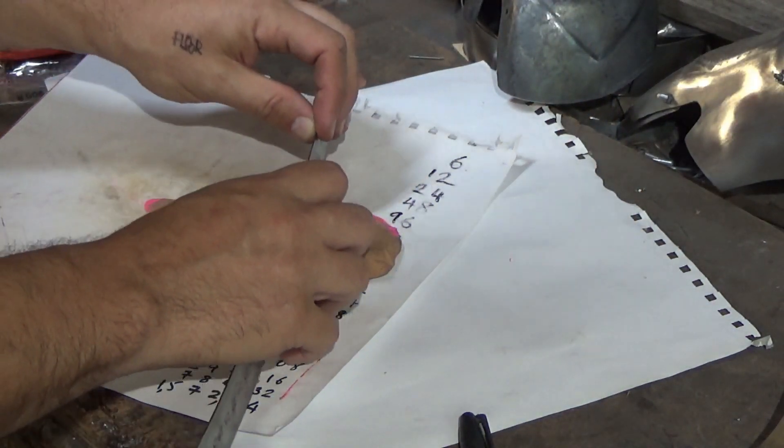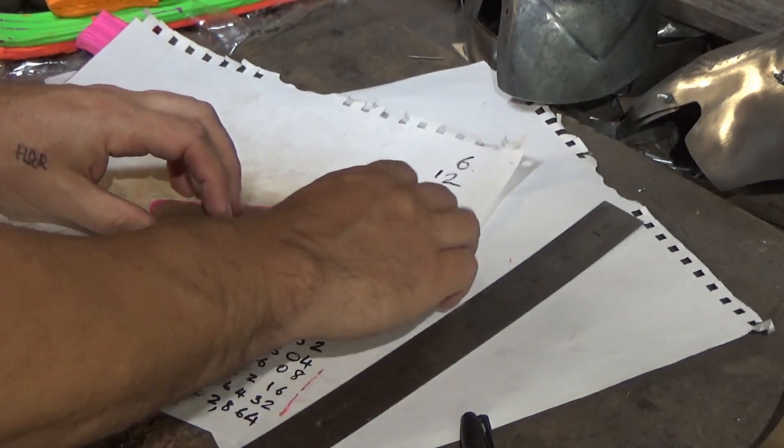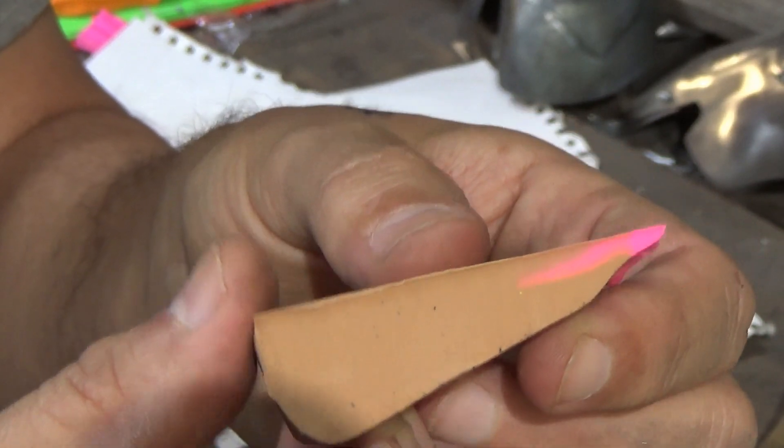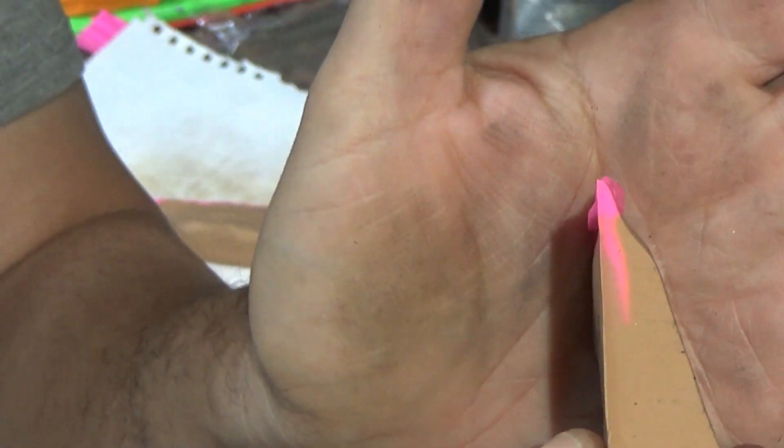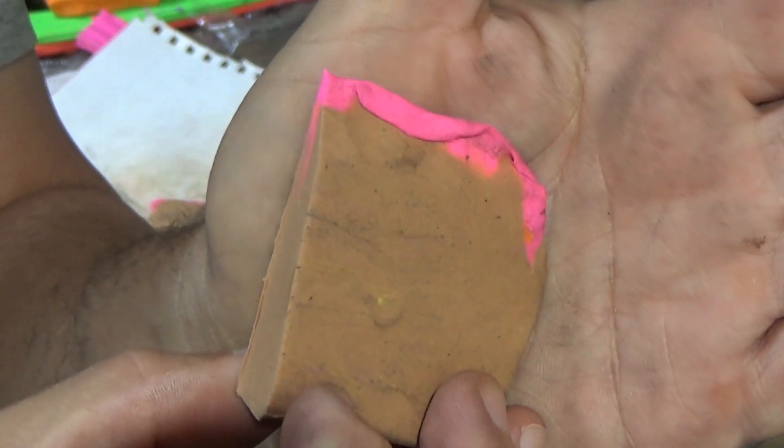But if we cut this hopefully. There we go. You can see how you've got that nice sharp edge in there which is revealed on the side.